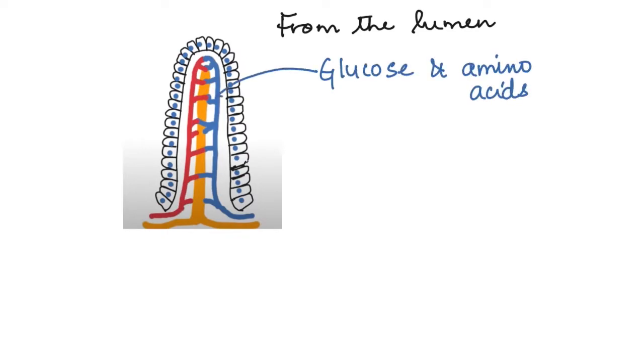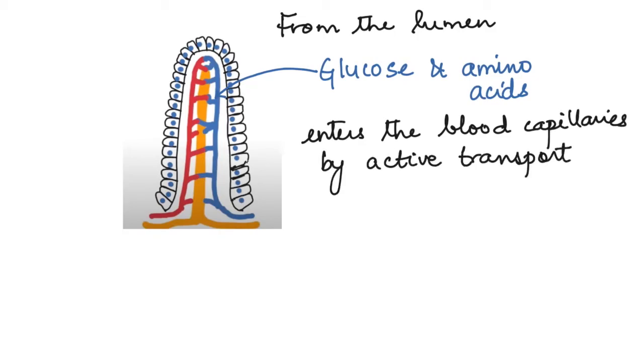Now, from the lumen of the small intestine, the glucose and amino acids enter into the capillaries inside these villi by a process that is active transport.